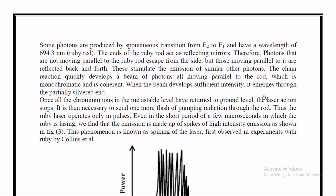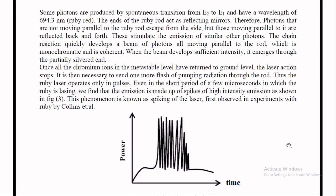Once all the chromium ions in the metastable level have returned to the ground level, the laser action stops. It is then necessary to send one more flash of pumping radiation through the rod. Thus the ruby laser operates only in pulses. The emission is made up of spikes of high intensity emission as shown in figure 3. This phenomenon is known as spiking of the laser, first observed in experiments with ruby by Collins and other scientists.